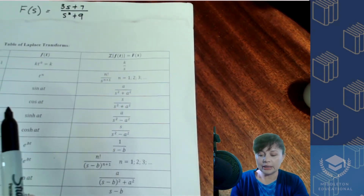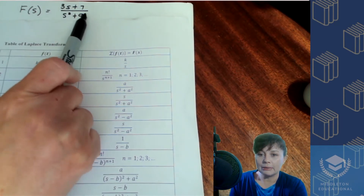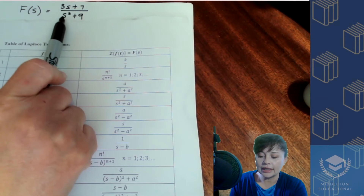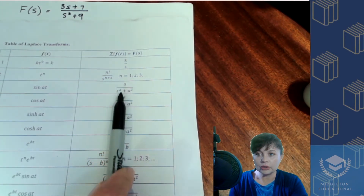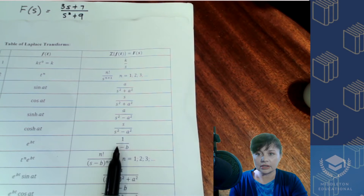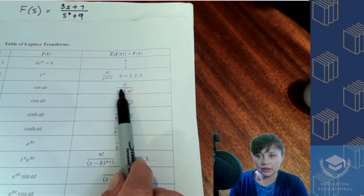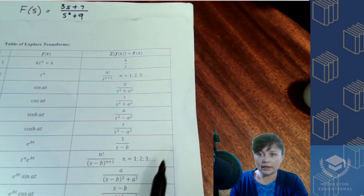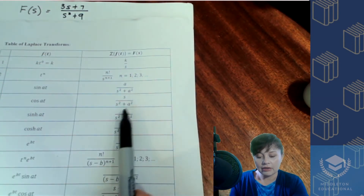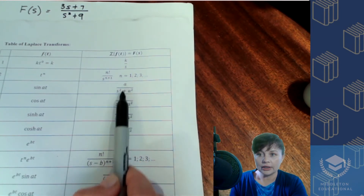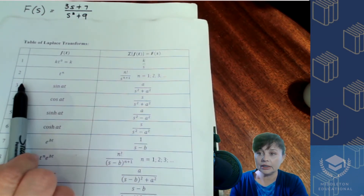Looking at our denominator, we have s squared plus some number. The s squared is the key feature. We scan the right-hand side of the formula sheet for denominators that look like this. s squared narrows it down, and adding a positive number further narrows it to entries number three and number four on the table.